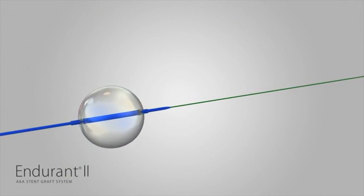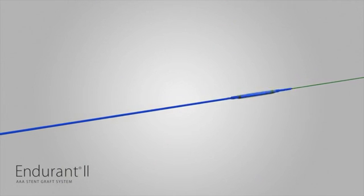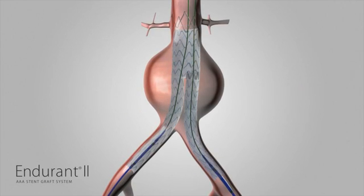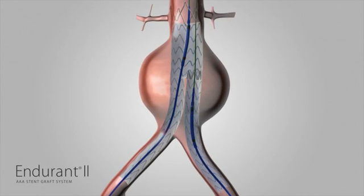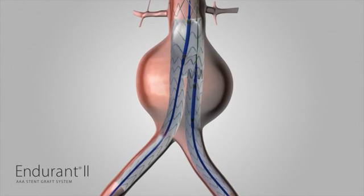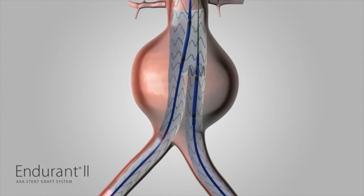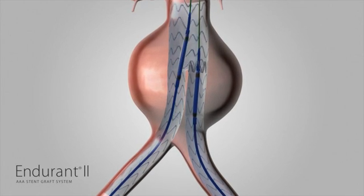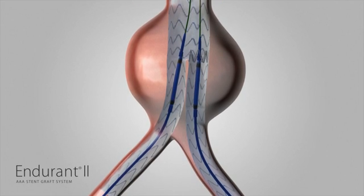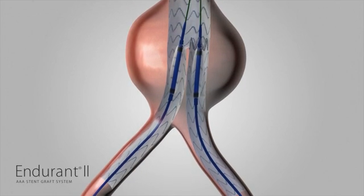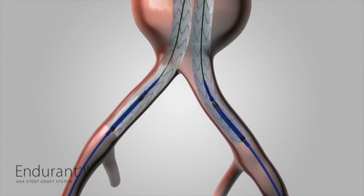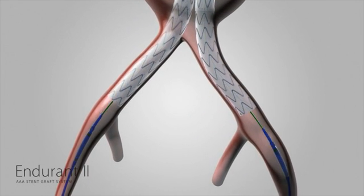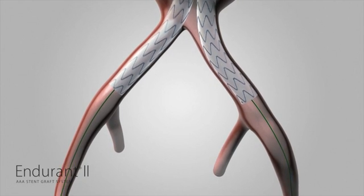The Reliant stent graft balloon catheter, packaged separately, may be used to improve aortic wall apposition. After consulting Reliant's instructions for use, advance the Reliant balloon over the guide wire to the target location. Next, inflate the Reliant balloon with contrast solution and model the graft to the vessel wall. Be careful to inflate the balloon only within the covered portion of the stent graft material. Deflate the balloon and repeat inflations and deflations as required within the stent graft material. Remove the Reliant balloon catheter from the patient when balloon modeling is complete.